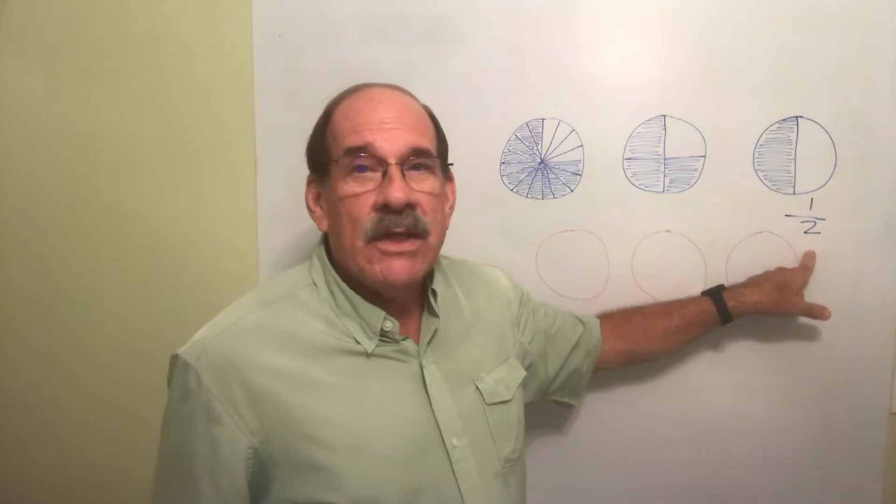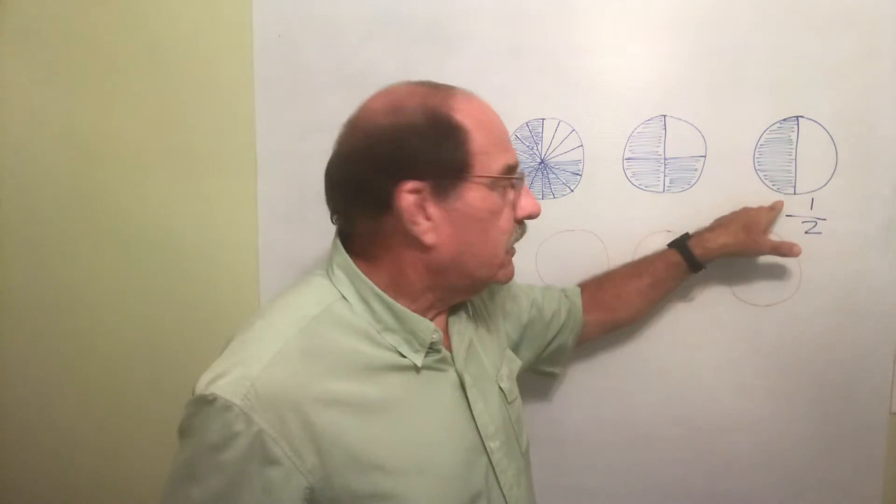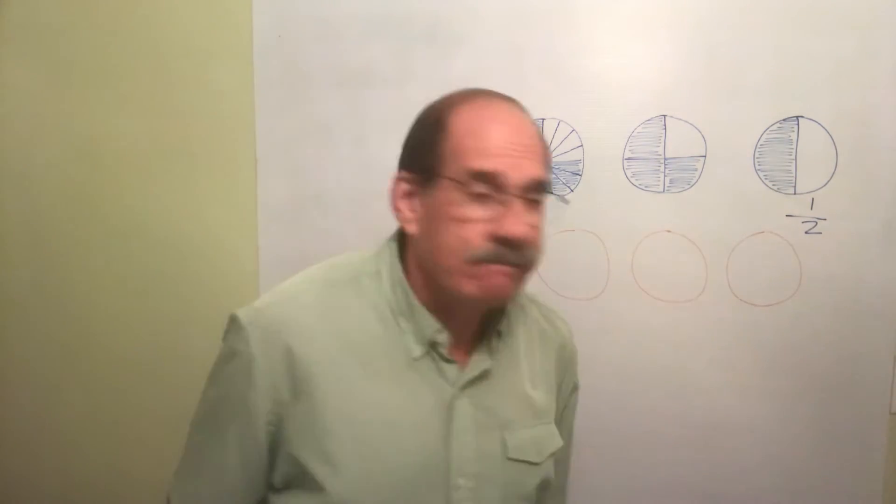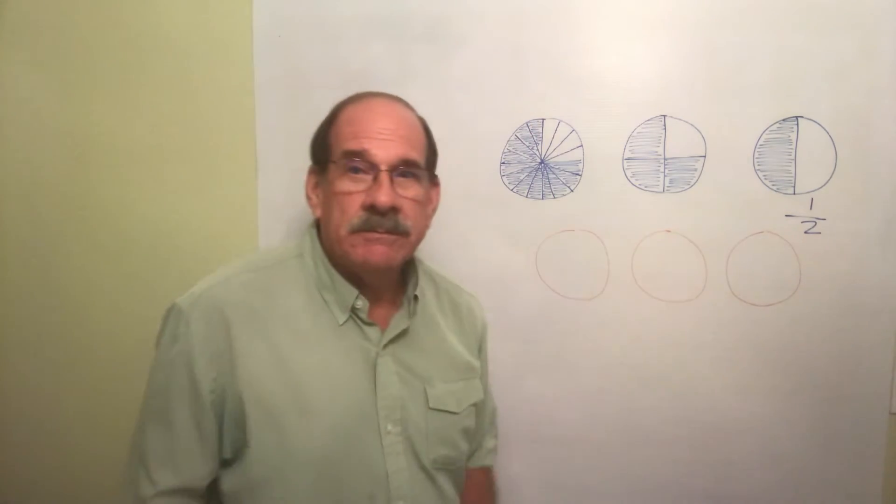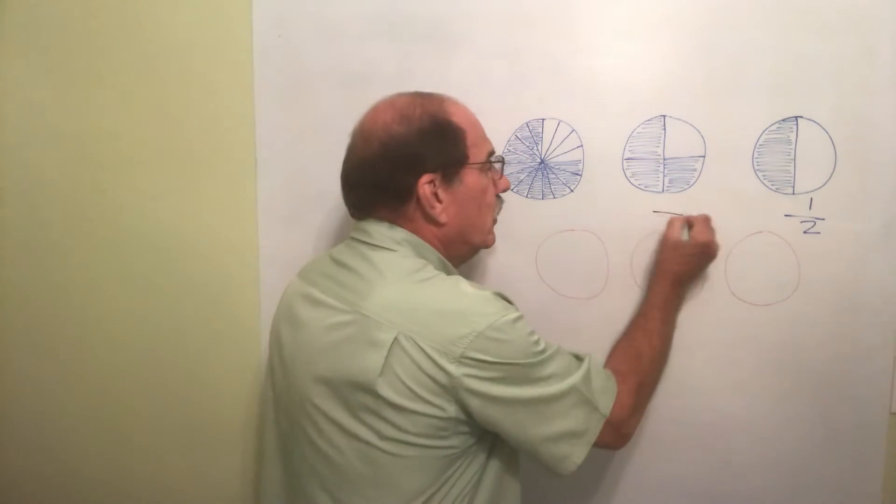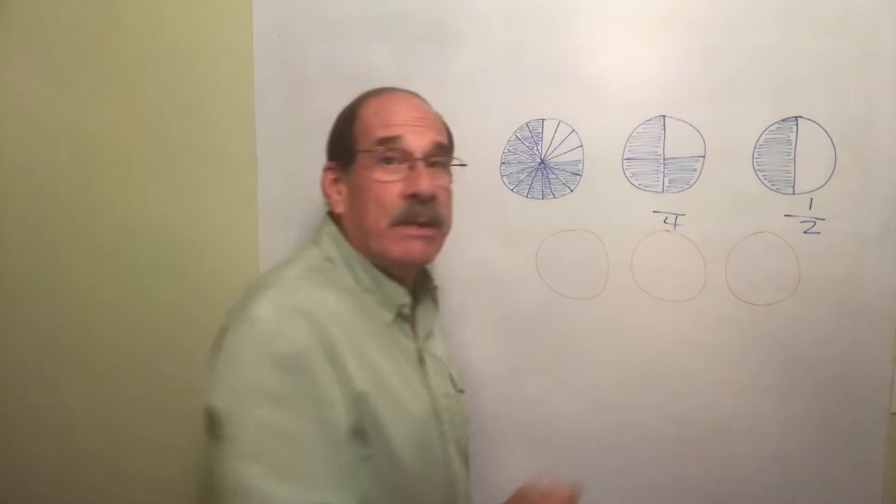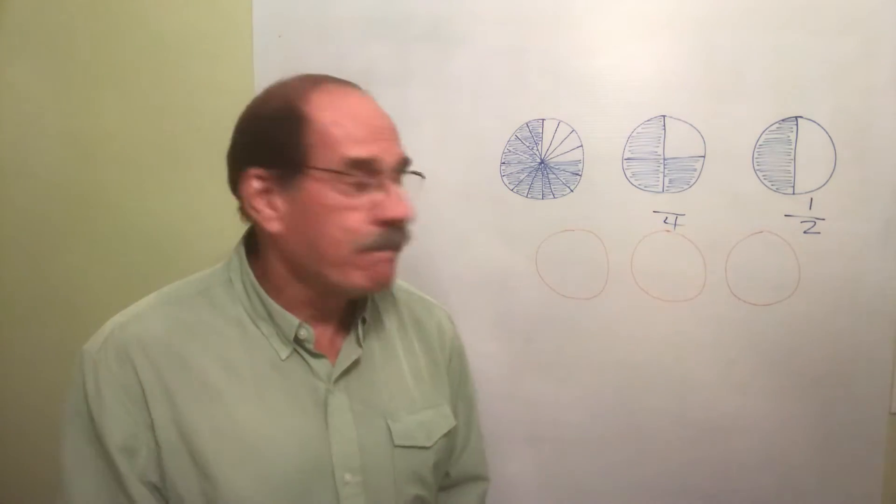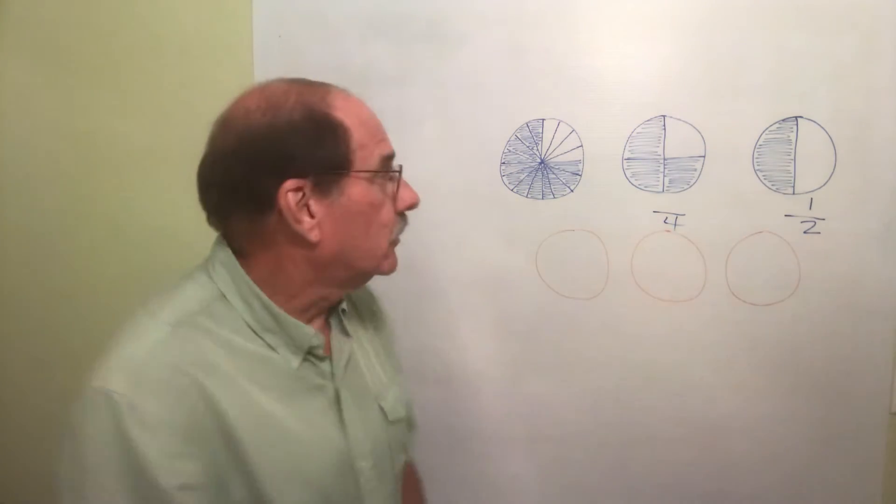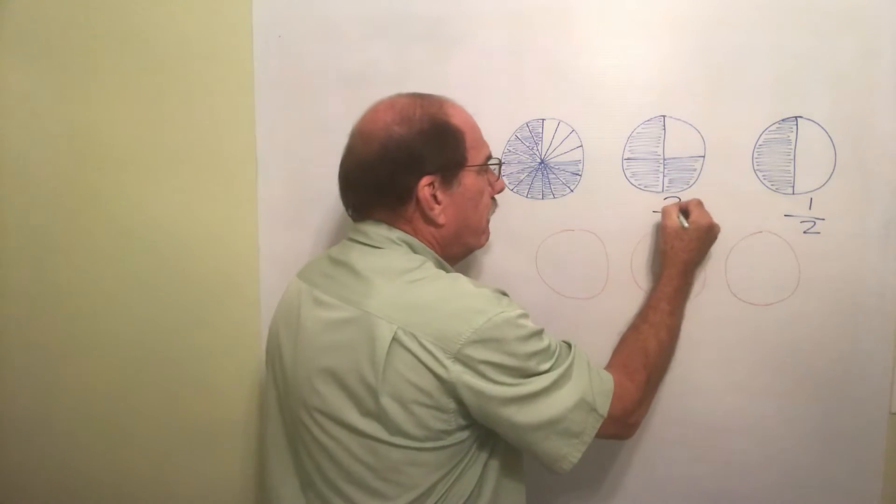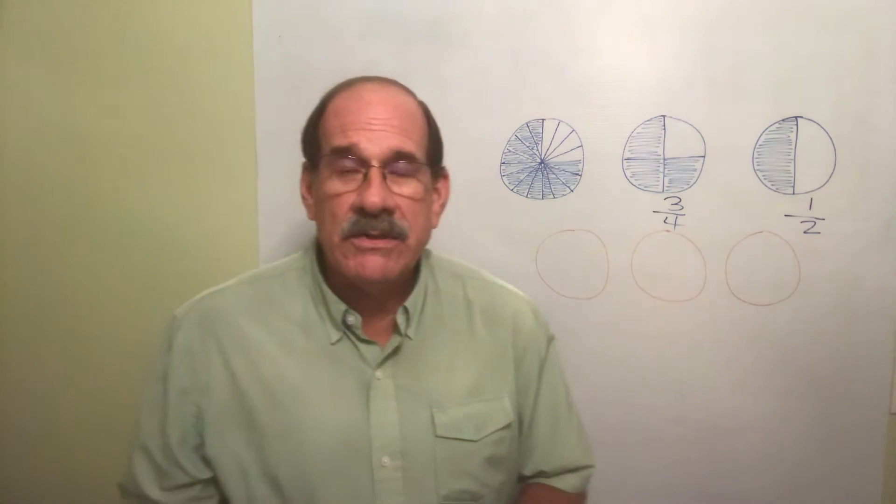The bottom number is the number of things you cut this into, the top is the number that you've got. What about this pizza? I cut my pizza into one, two, three - into four pieces.